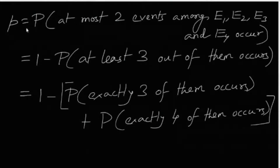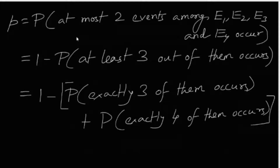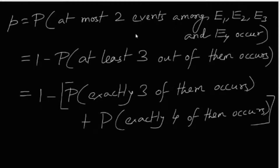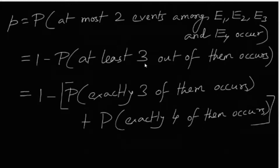P is defined as the probability that at most two events among E1, E2, E3, and E4 occur. To ease our calculation, we take the complement: P equals 1 minus the probability of the complement event. The complement of 'at most two events occur' is 'at least three events occur.' At least three can be further decomposed into exactly three plus exactly four.